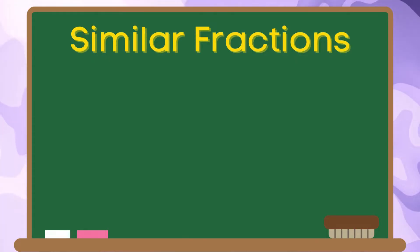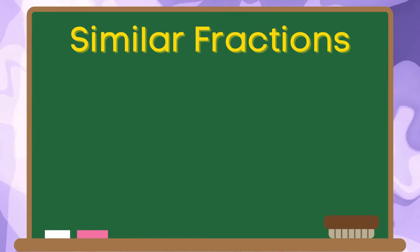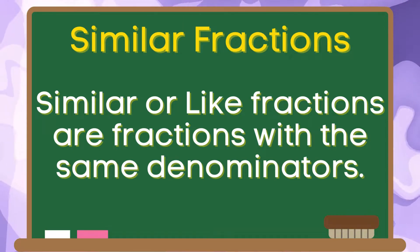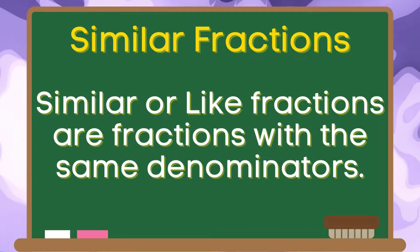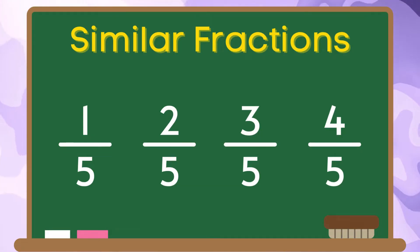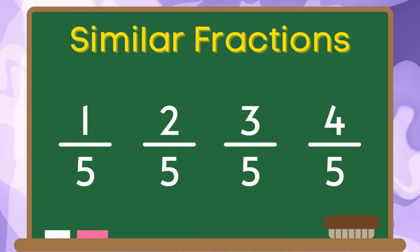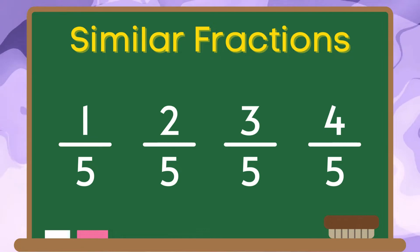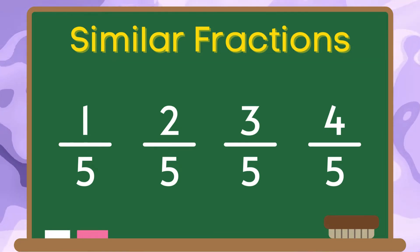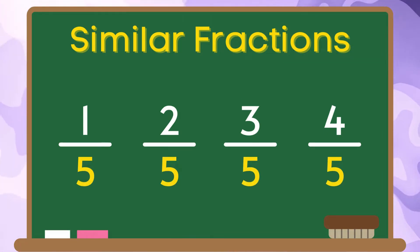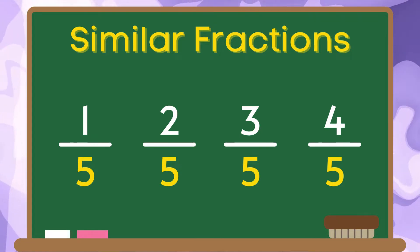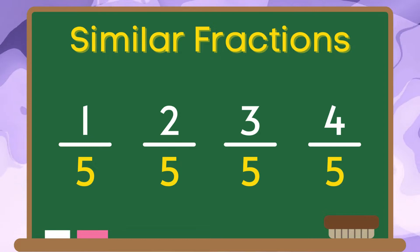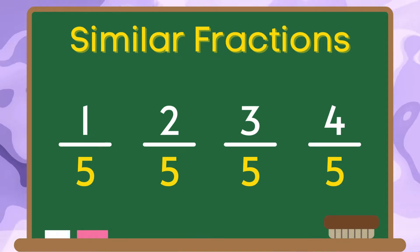Now, let us talk about similar fractions. Similar or like fractions are fractions with the same denominators. These are the examples of similar fractions. We have one-fifth, two-fifths, three-fifths, and four-fifths. As you can see, the denominators of these fractions is five. We can say that these fractions are like or similar fractions.